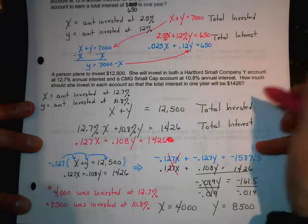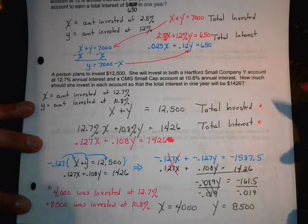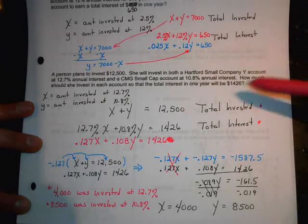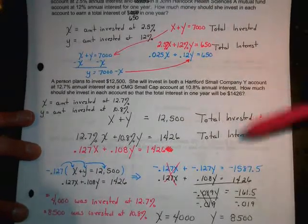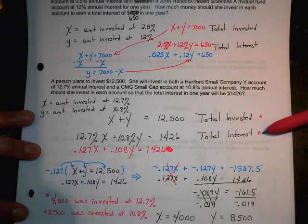Those are the two examples. There's a bunch in my math lab. Give them a try. I don't care if you solve them with elimination or with substitution, but the way you set them up is always going to be the same. A total is invested, and then a total interest.